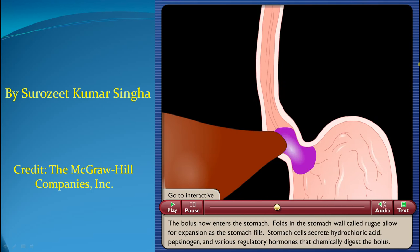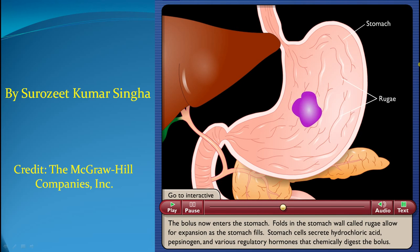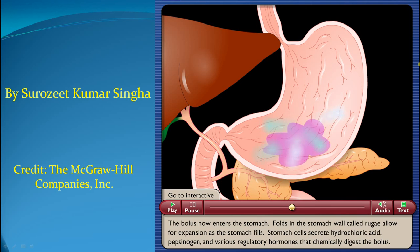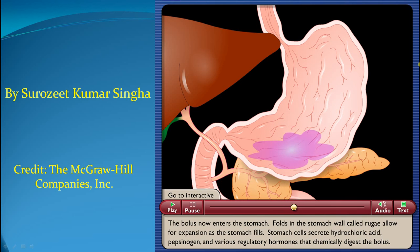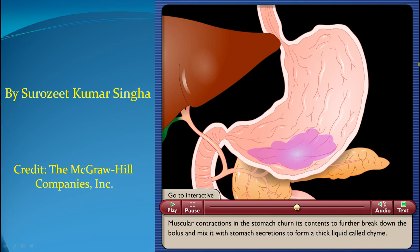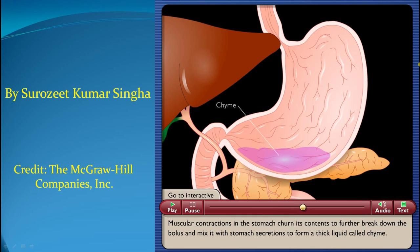The bolus now enters the stomach. Folds in the stomach wall, called rugae, allow for expansion as the stomach fills. Stomach cells secrete hydrochloric acid, pepsinogen, and various regulatory hormones that chemically digest the bolus. Muscular contractions in the stomach churn its contents to further break down the bolus, and mix it with stomach secretions to form a thick liquid called chyme.